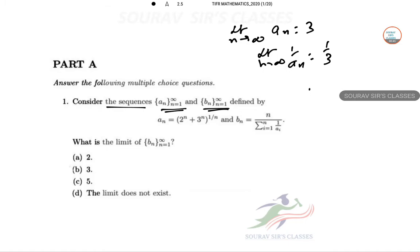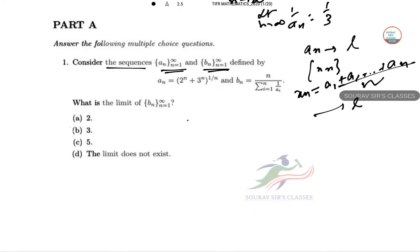Now if a_n converges to l, then x_n where x_n = (a_1 + a_2 + ... + a_n)/n also converges to l, the sum of these. So that is limit as n tends to infinity of a_n equals l, or limit as n tends to infinity of (a_1 + a_2 + ... + a_n)/n also equals l.